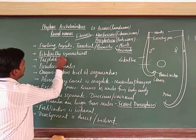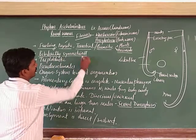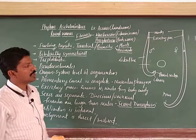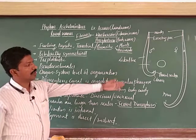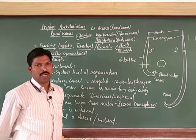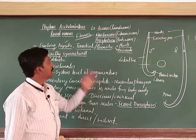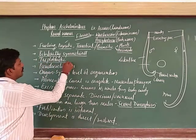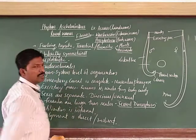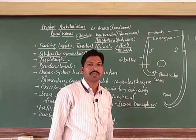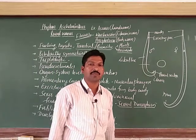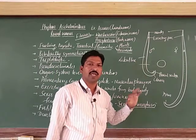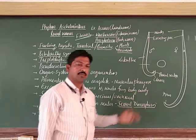These are bilaterally symmetrical — the body shows bilateral symmetry because the lateral line helps divide it into two parts. All members are triploblastic, meaning the body is made up of three germ layers.